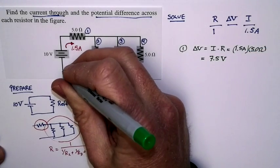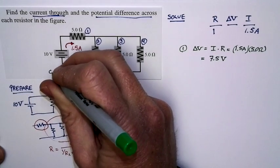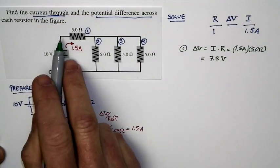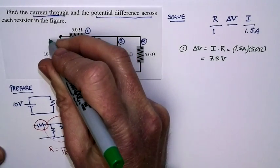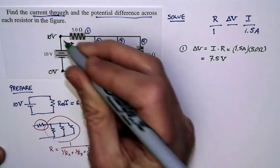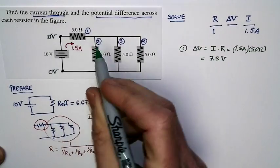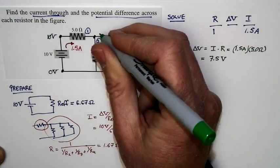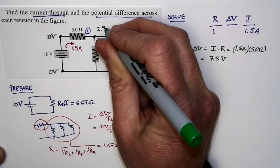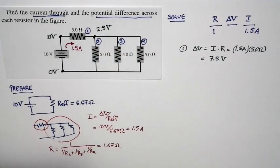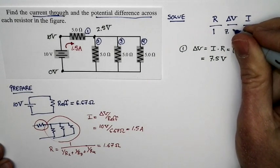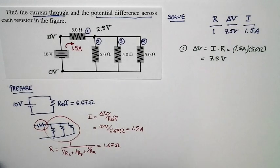Now we can start labeling potentials in our circuit. It's our convention to call the lower left corner of the circuit 0 volts. The potential increases by 10 volts inside the battery, so we end up with 10 volts at the top. There's a 7.5 volt potential difference across this resistor, so the potential at this point in the circuit is 2.5 volts.